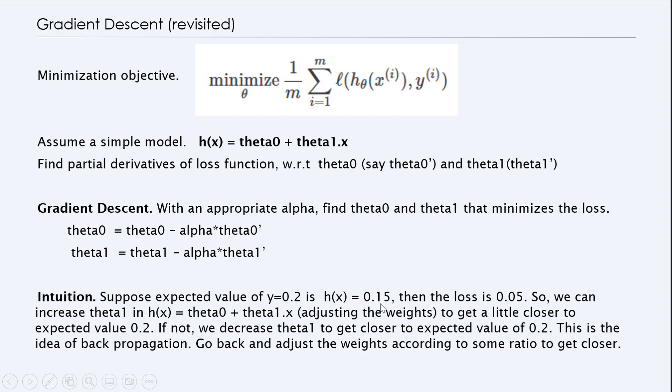If not, we decrease theta_1 to get closer to the expected value of 0.2. So either you increase or decrease to try to get to the expected value of 0.2. So that's the idea of backpropagation. So we just go back and adjust the weights according to some ratio to get closer.